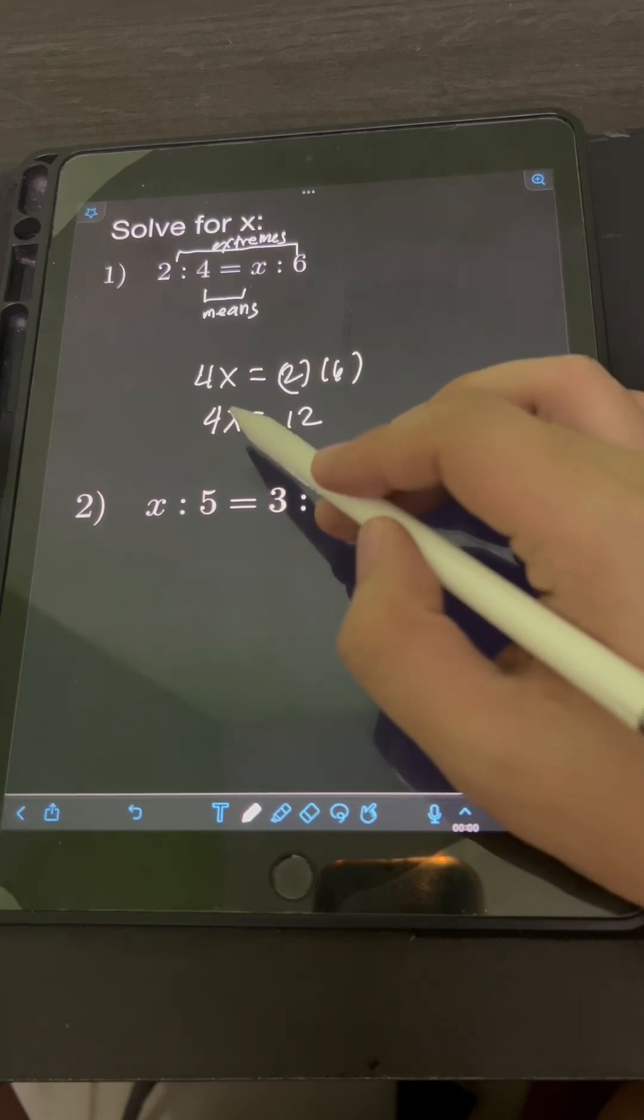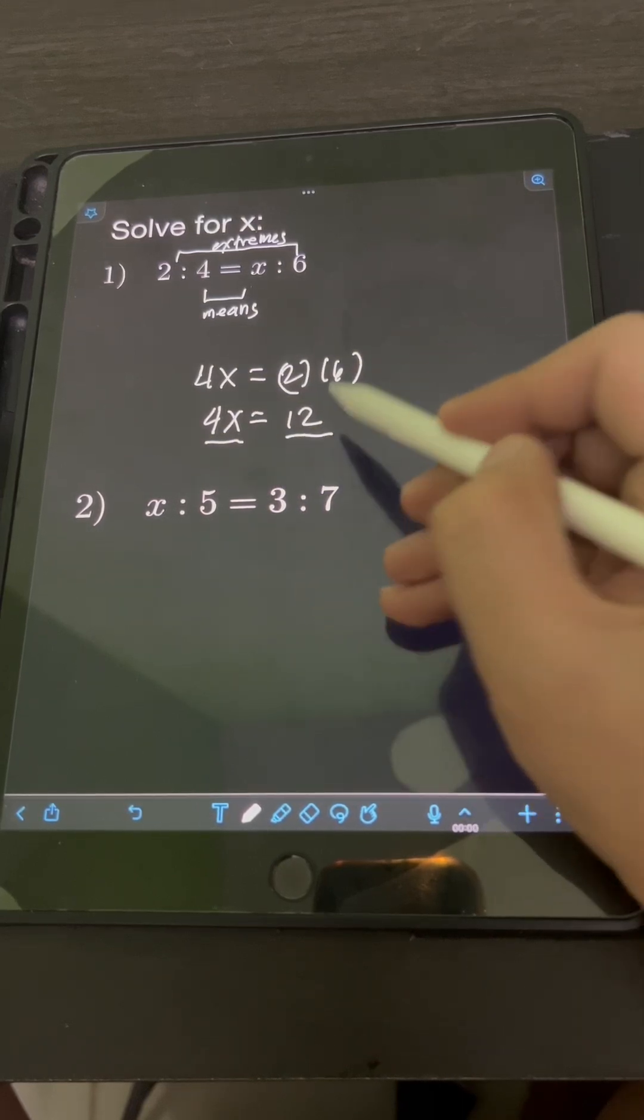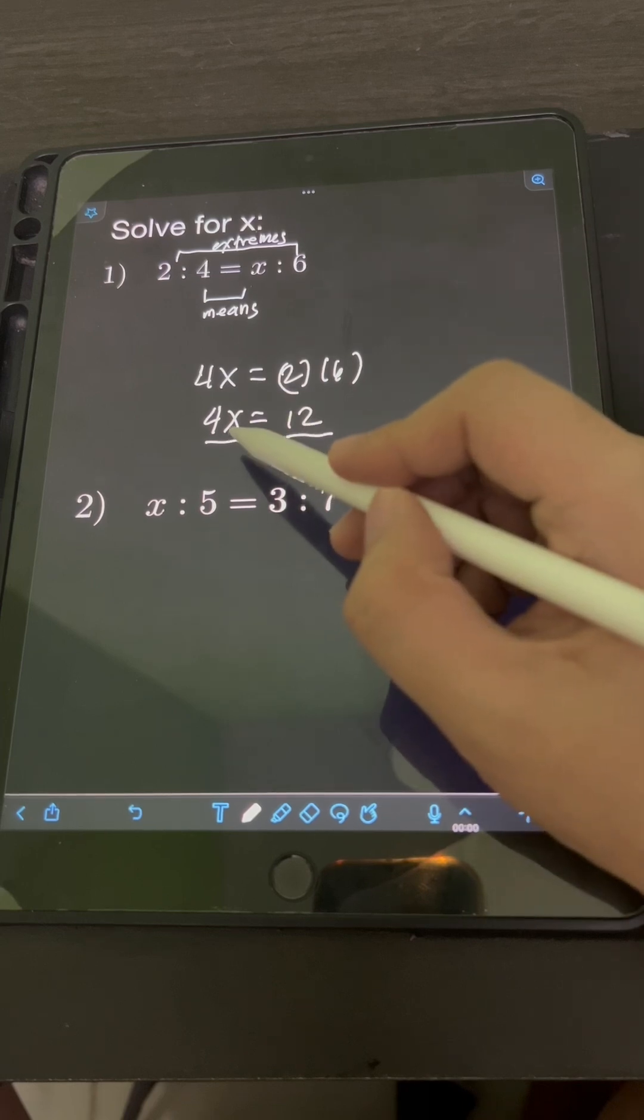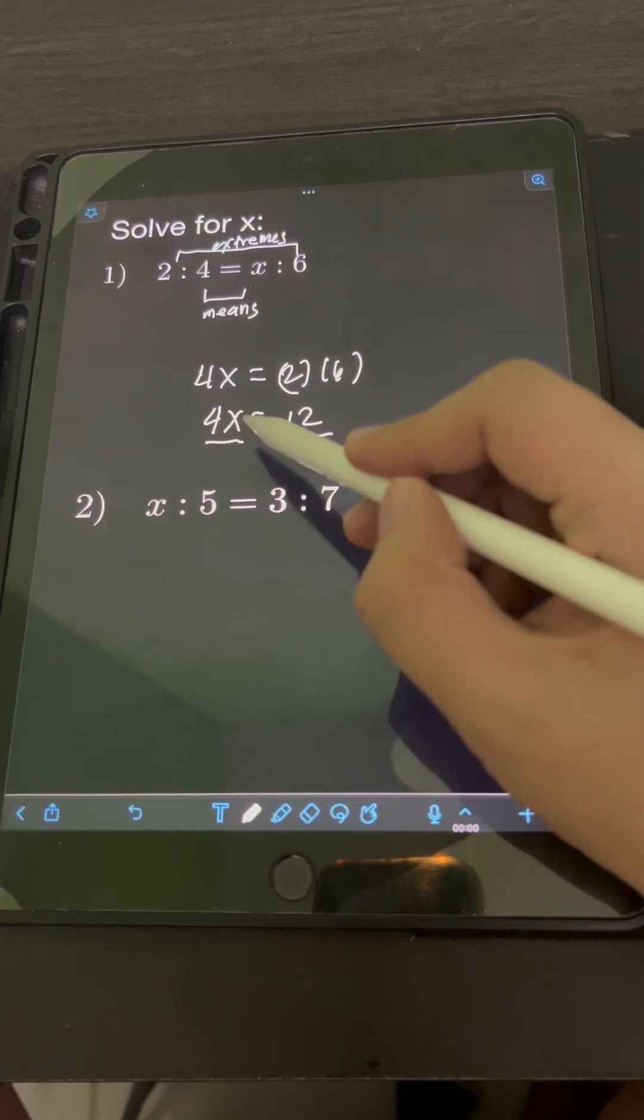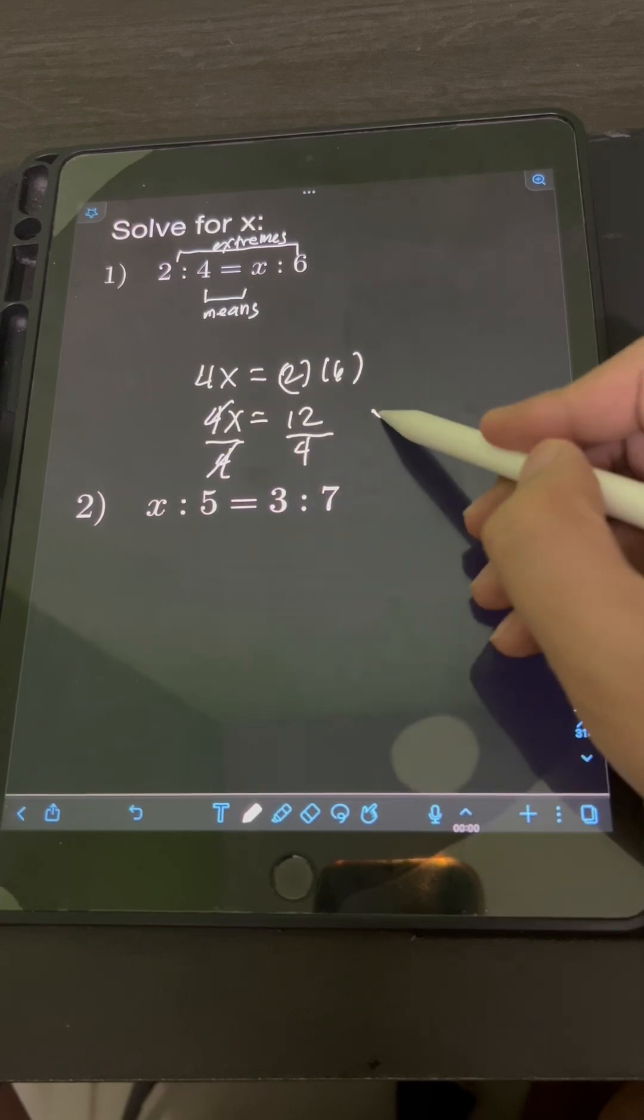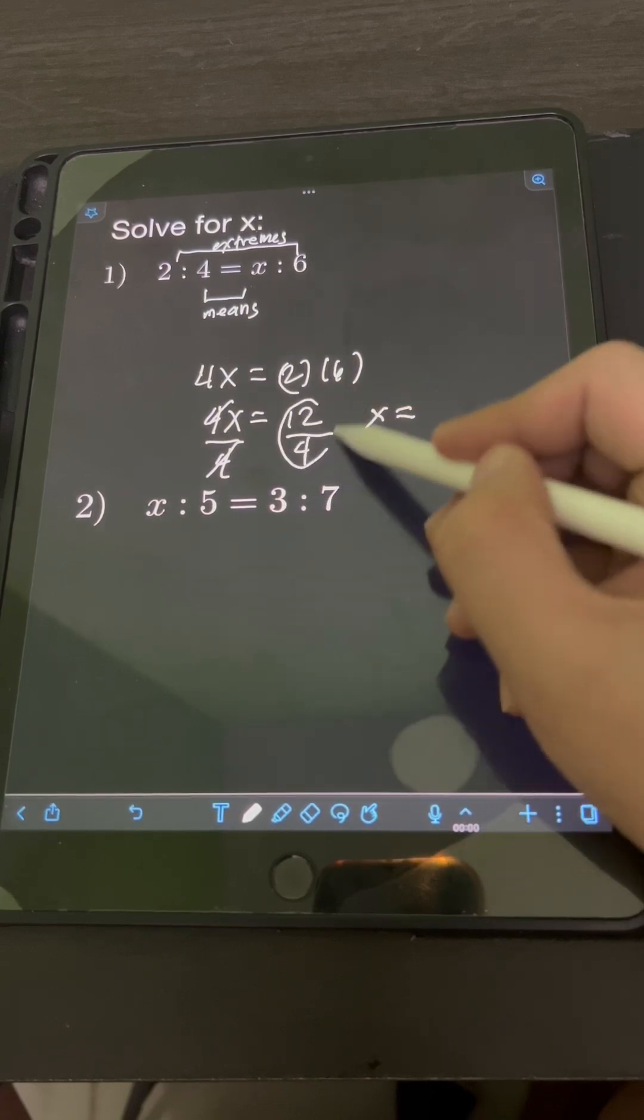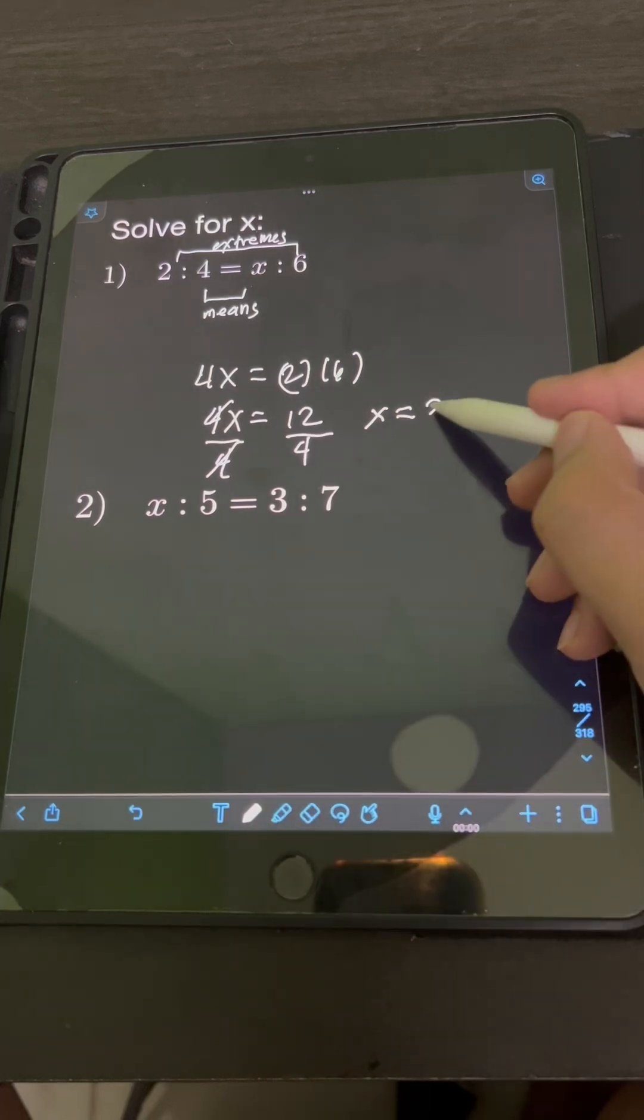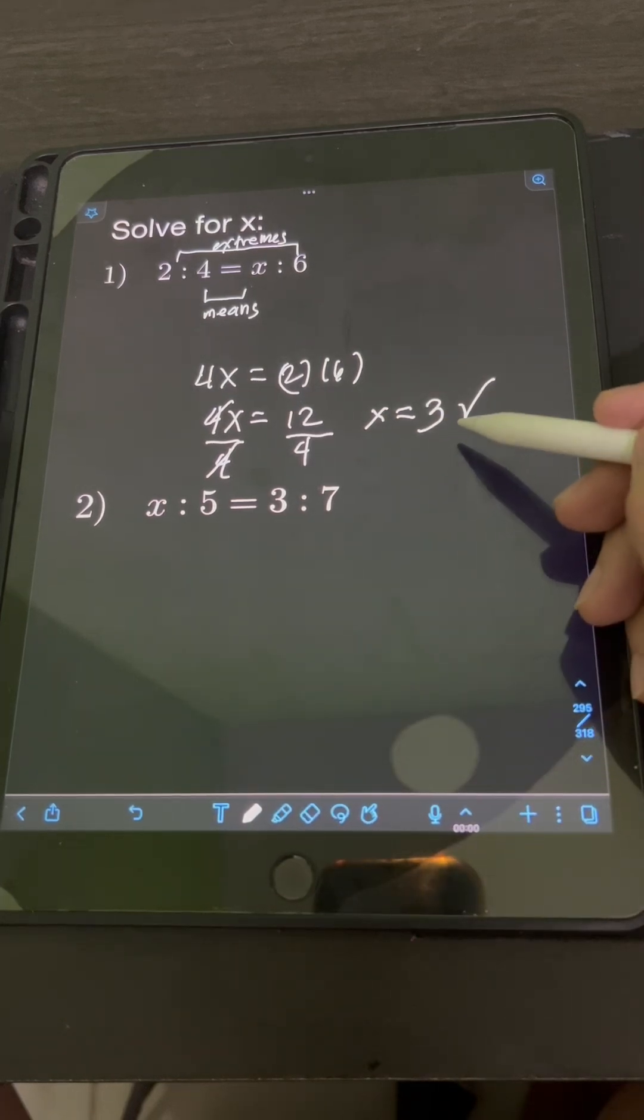And then to solve for this x, we divide both sides of the equation by the coefficient of x or the constant beside x which is 4. So cancelling out this 4, we can now solve for x equal to 12 divided by 4 or 3. So the value of x is 3.